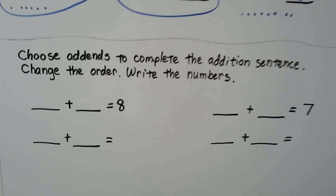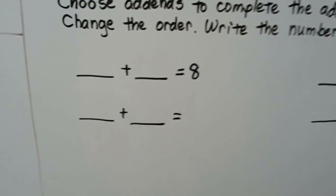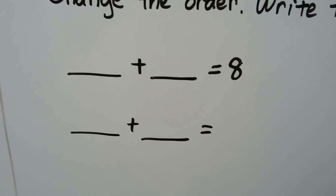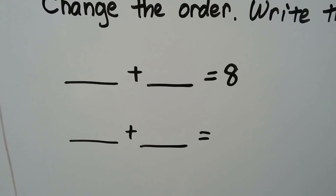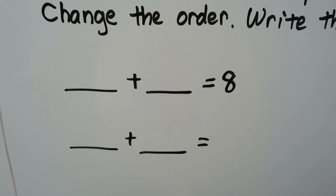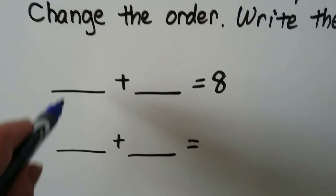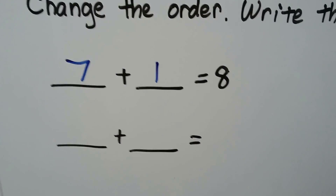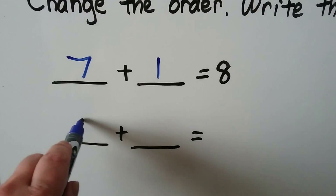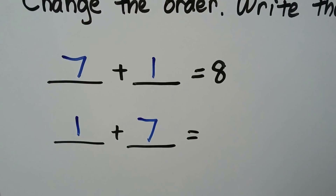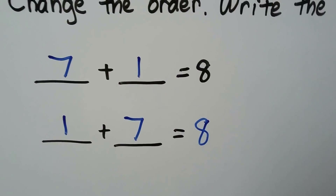Choose addends to complete the addition sentence, change the order, write the numbers. What two numbers can we think of that will equal 8? Let's try to make it so they're not the same number. How about 7 plus 1? That equals 8. So change the order — now we put the 1 here and the 7 here. And what will it equal? It will be equal to 8. The sum stays the same.